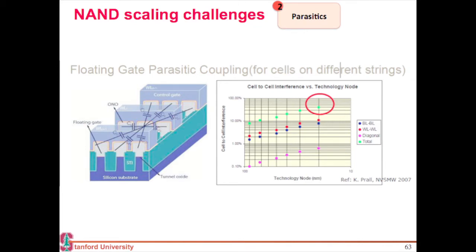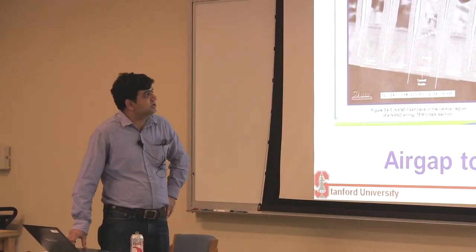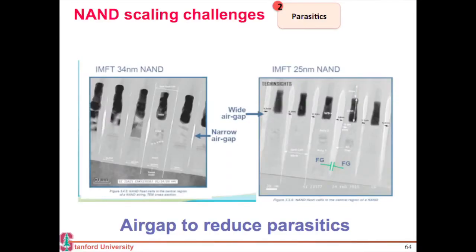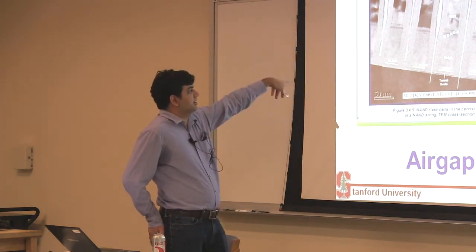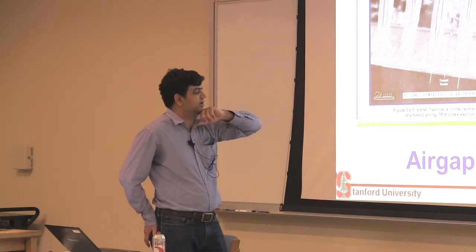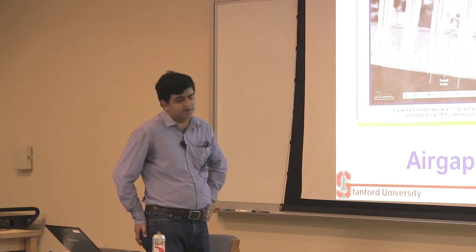And the parasitics, as I showed, are becoming an even bigger problem. One way to get around the parasitics is to insert an air gap. If you have an air gap, that's a material with the lowest dielectric constant. Between these two floating gates, instead of filling it with dielectric, you intentionally introduce this air gap. There's quite a bit of technology that goes into achieving that air gap uniformly between these two cells. Air gaps are routinely used in flash memory to reduce parasitics.